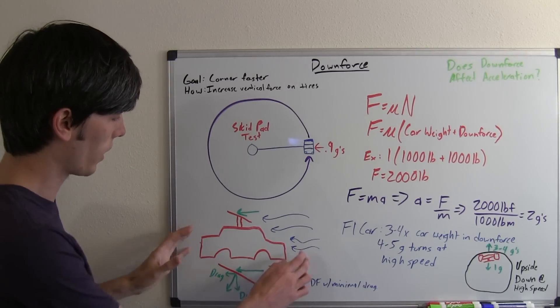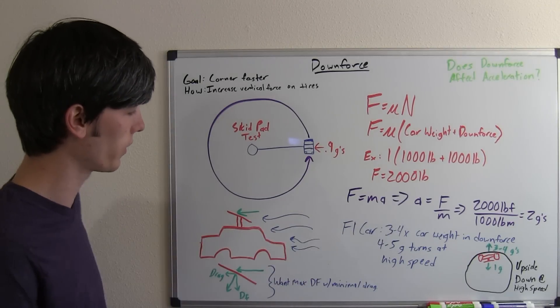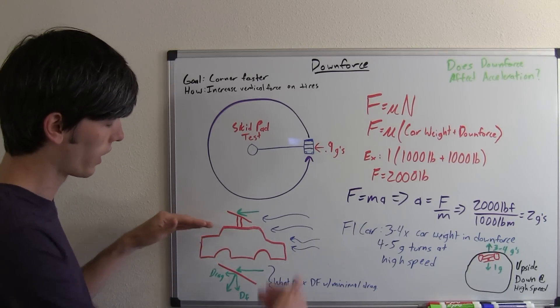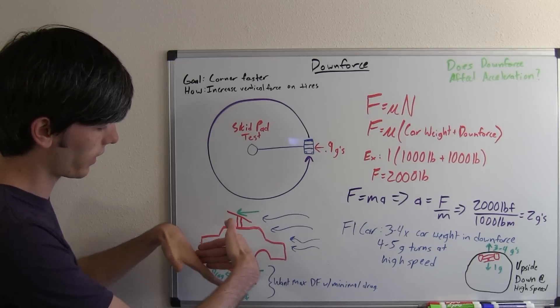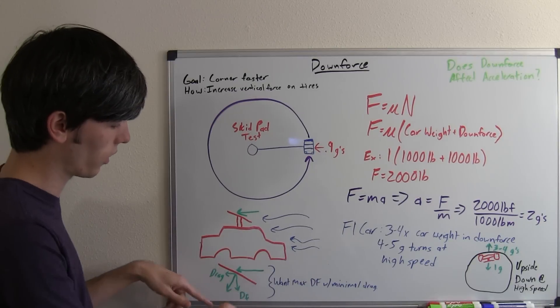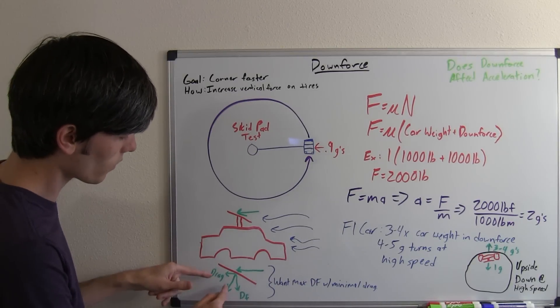So what is downforce? Well, when we have a car traveling on the ground here, we've got the air passing over it, we've got this ridiculous plate that I've put on top of it. This air is going to hit this slanted plate, and as it hits that slanted plate, it's going to apply a force in the backward direction and also in the vertical direction because it's at a slant.